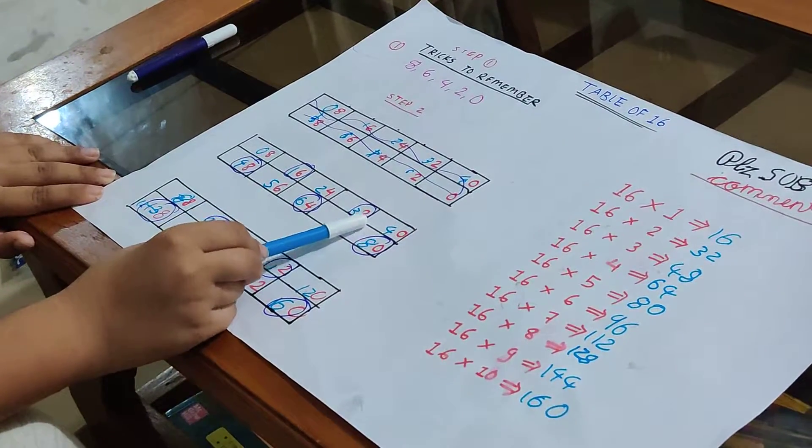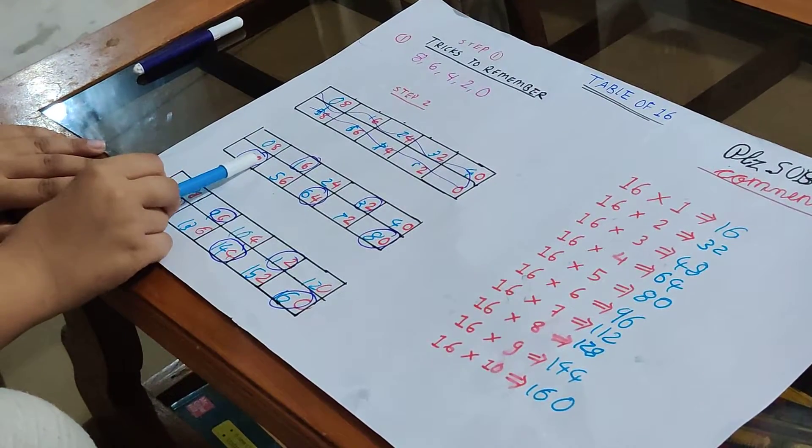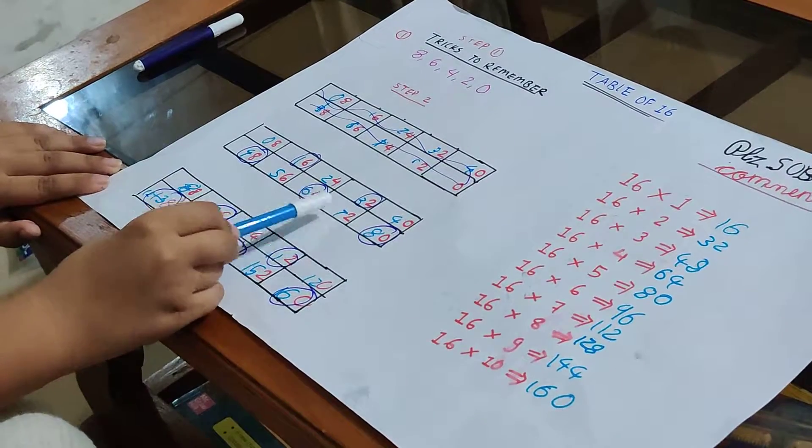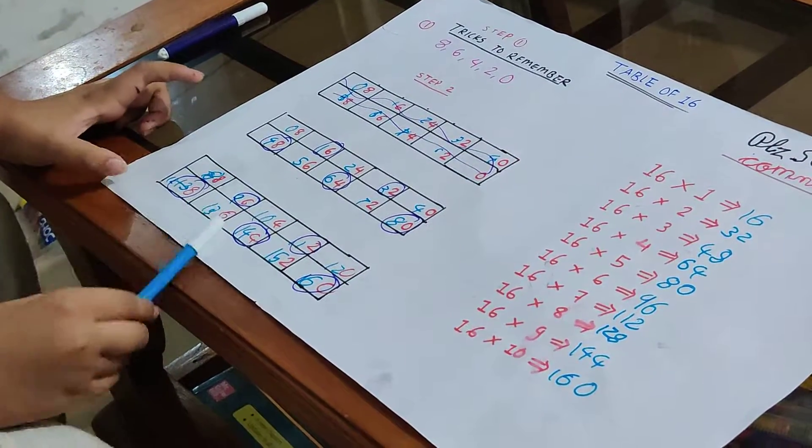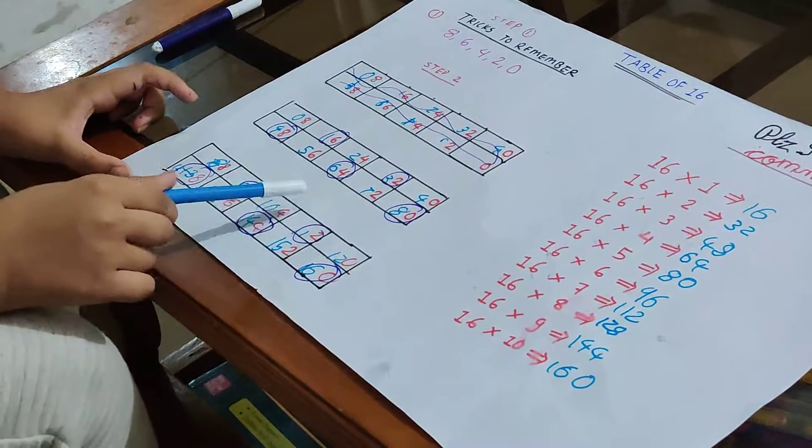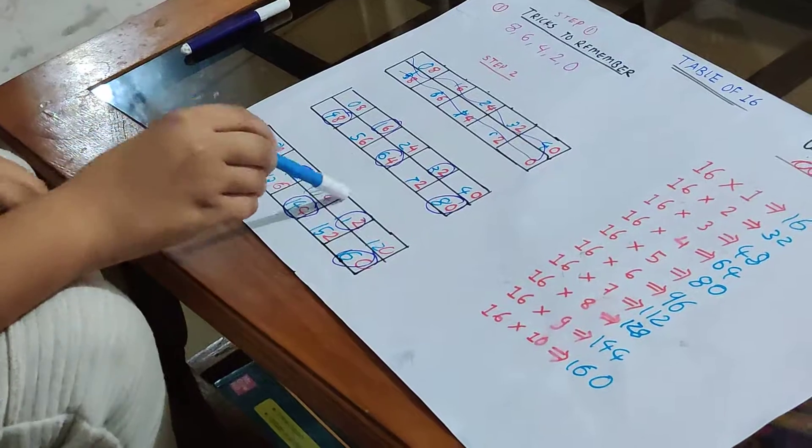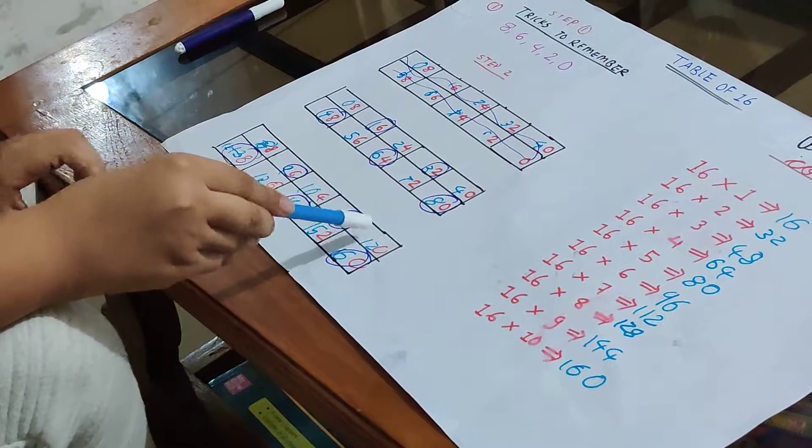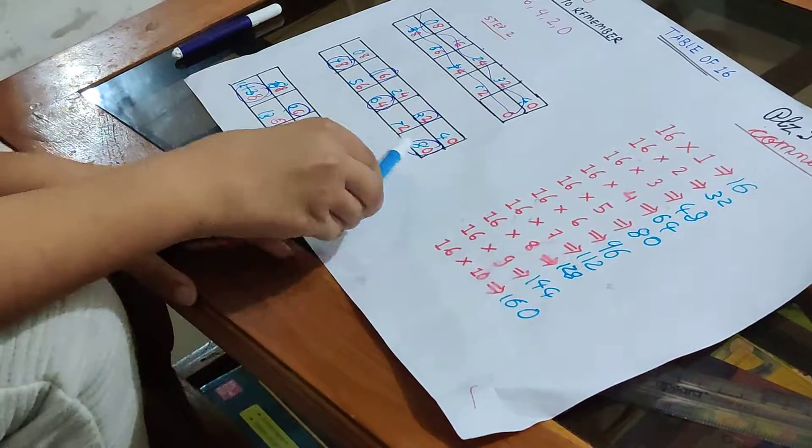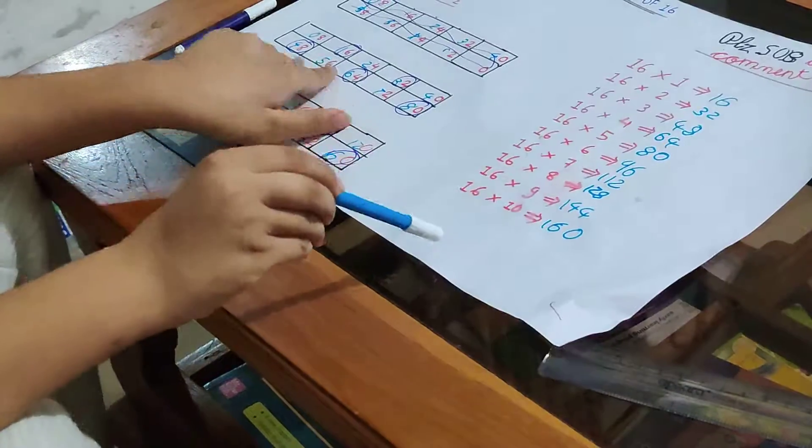8, 6, 4, 2, 0, and then repeat this again with the bottom column. And then you get the 16 table complete.